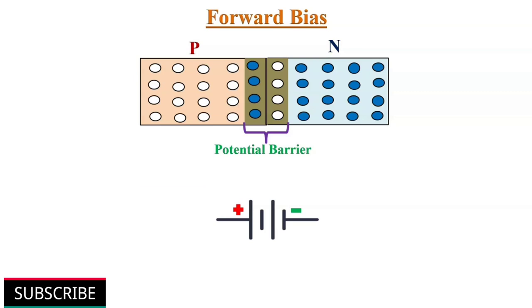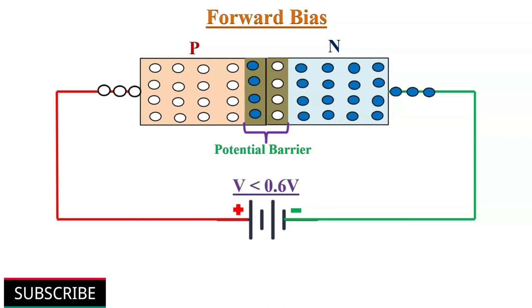Forward bias: when external DC voltage is applied to the p-n junction such that the positive terminal of the voltage source is connected to the p-type, while the negative terminal is connected to the n-type. At first, when we increase voltage slowly from zero, no current will flow through the diode due to the presence of the potential barrier. For example, in silicon diode, the voltage level up to 0.6V.